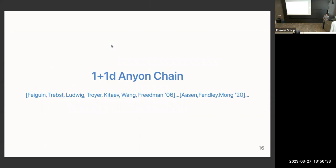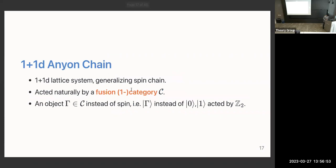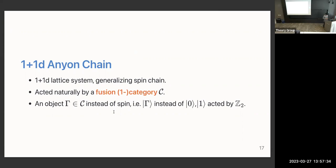I'll now review the anyon chain, first introduced in the famous Microsoft/Freedman et al. paper called the golden chain. The 1+1 dimensional anyon chain is a 1+1 dimensional spin system that generalizes the spin chain, and the model is naturally acted on by a fusion one-category symmetry. The input of the model is this fusion category, and an object inside it, which is used as the variable instead of spin.